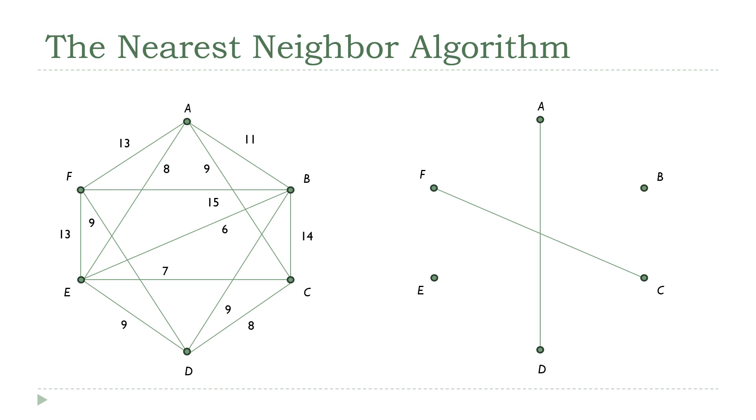Now, I think our next best option is BE. That's the 6. So, if we add that and remove it, next I think we're going to get the 7 from E to C, and we'll remove that as well.